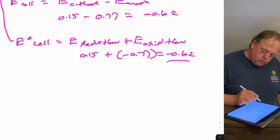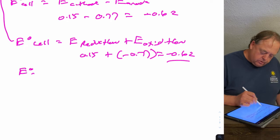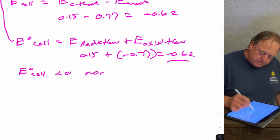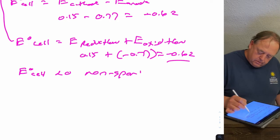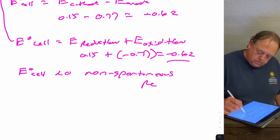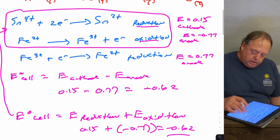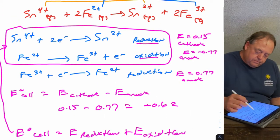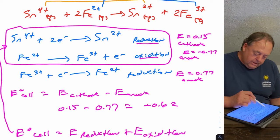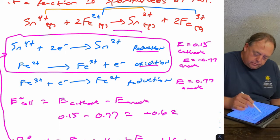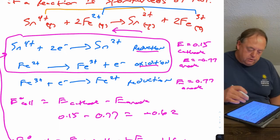E zero cell is less than zero, which means it's a non-spontaneous reaction. So this reaction is non-spontaneous forward, meaning this reaction will be spontaneous in the reverse direction.